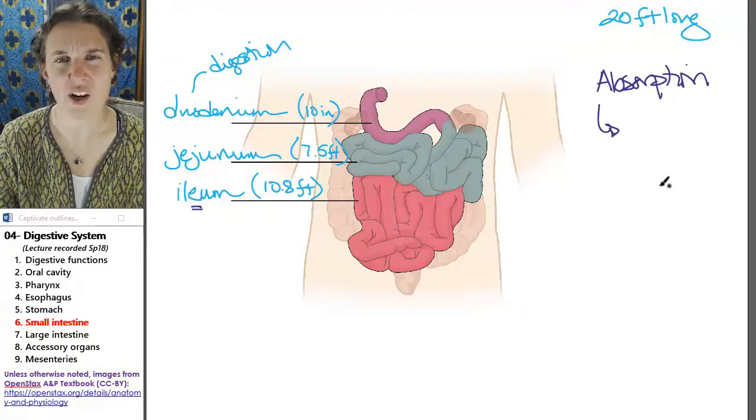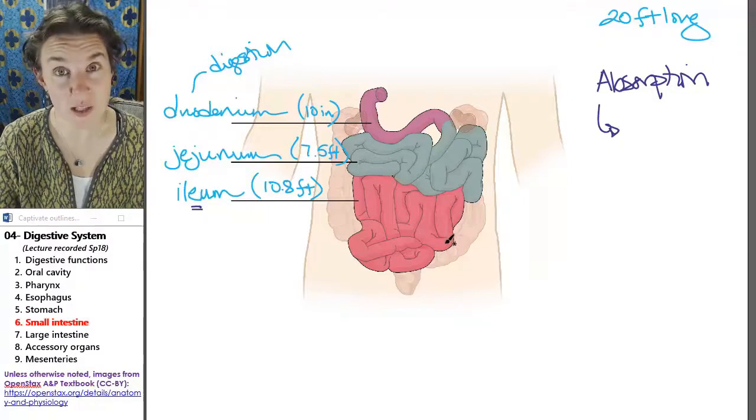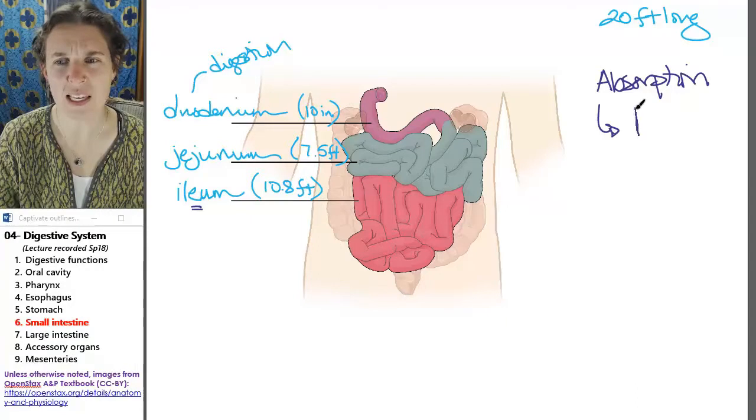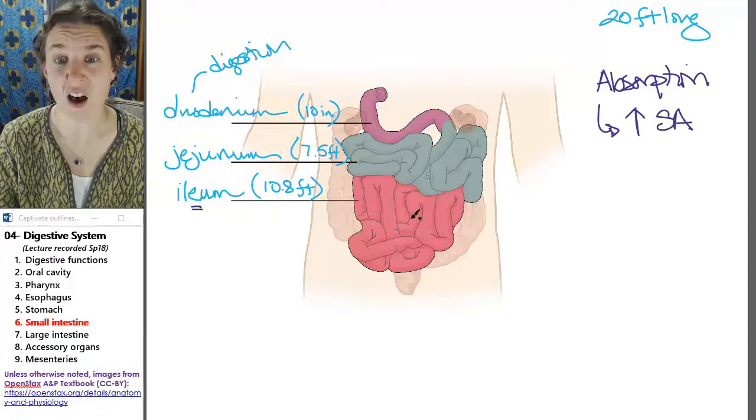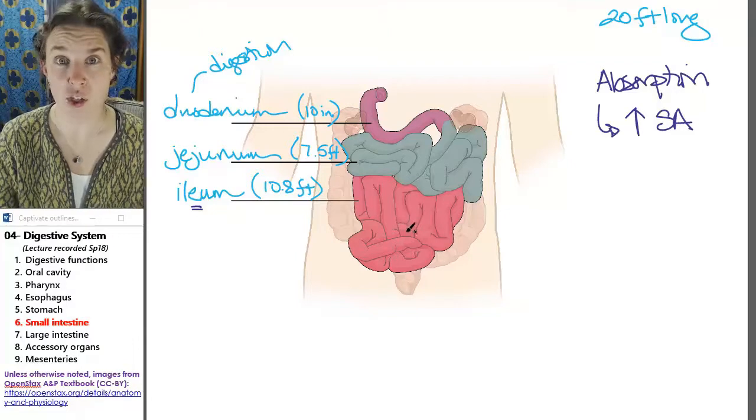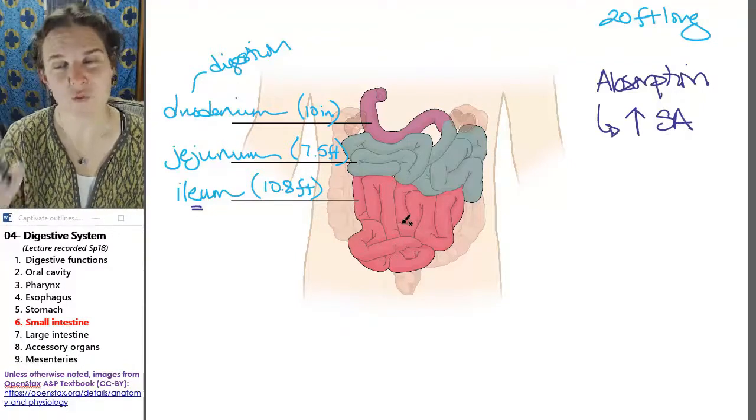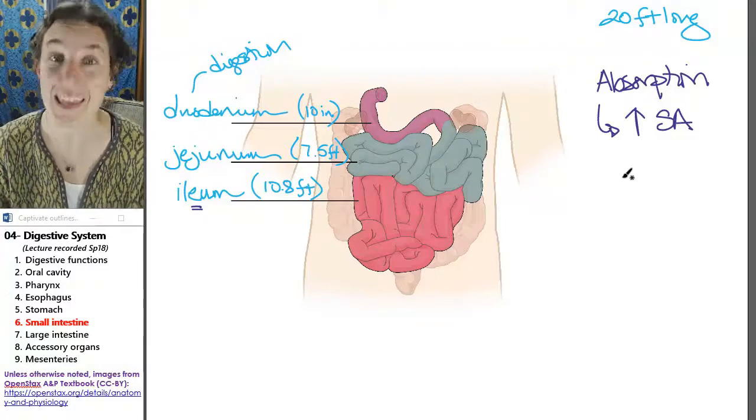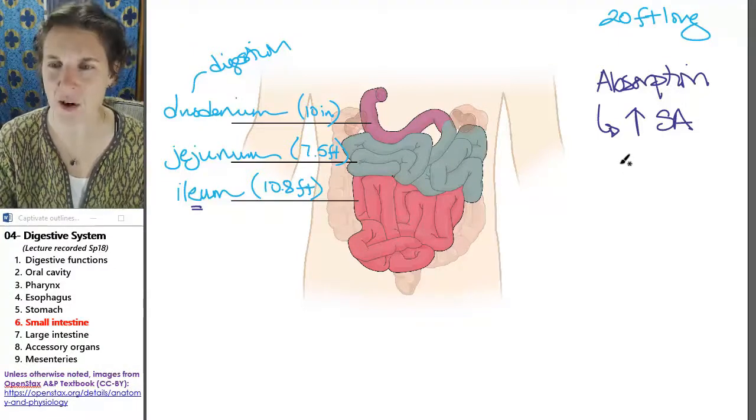So there are a couple of things that are true about the structure of the small intestine that help with this. And these things have to do with increasing the surface area of the tube itself. There's four ways that you can increase the surface area. And we're going to look at them again in more detail. But I'm going to list them out for you now.